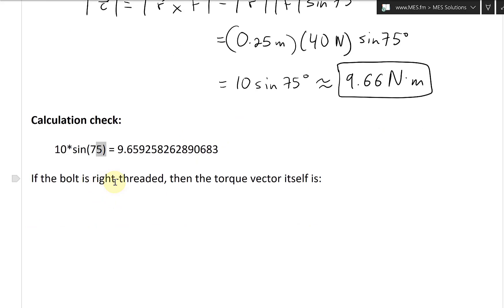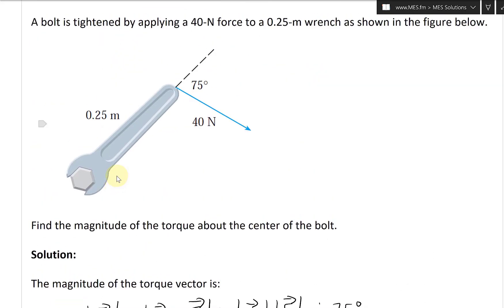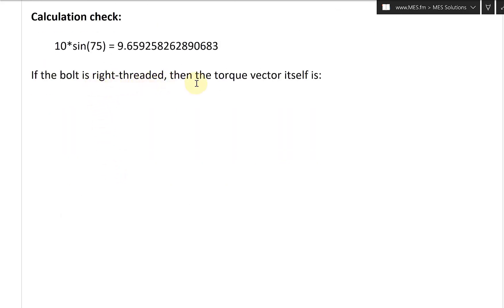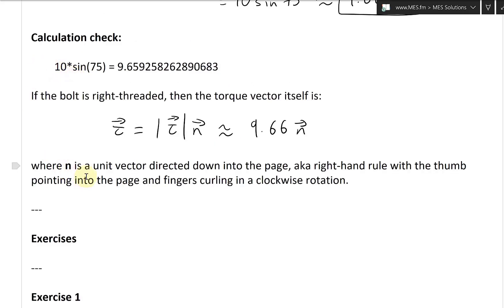So now going further. So if the bolt is right-threaded, then the torque itself is, I think it's right-threaded, just torquing with right-hand rule. So righty-tighty. Like this. So if it's right-hand is curling, if your fingers are curling in, you're going to be pointing into the page as your thumb. So if the bolt's right-threaded, then the torque vector, number of the key words, vector, not just the magnitude, this equals to, here's a torque vector, which equals to the magnitude of the torque times it by the vector going into the page n. We'll call this unit vector n. Then this would be writing as 9.66 newtons, and then this is times by unit vector n. And again, where n is a unit vector directed down into the page, aka right-hand rule with the thumb pointing into the page and fingers curling in a clockwise rotation. Again, the unit vector is just a magnitude once. You're not changing anything. All you're doing is stretching that unit vector to a magnitude that corresponds to the magnitude of the torque. It's fascinating stuff.